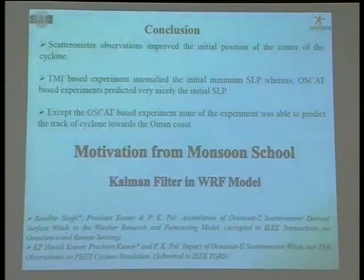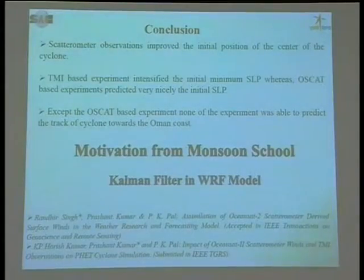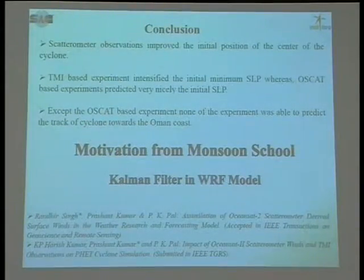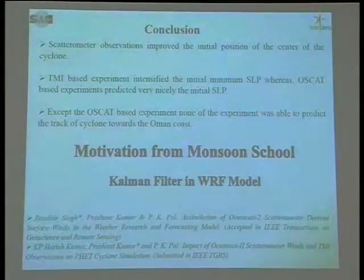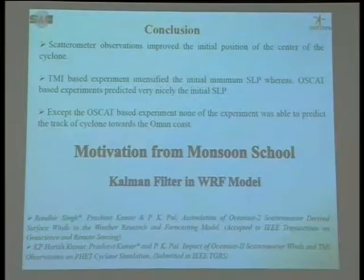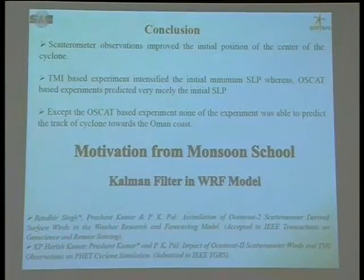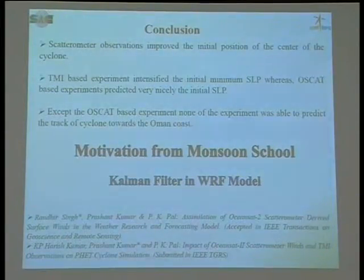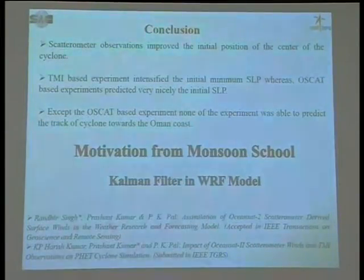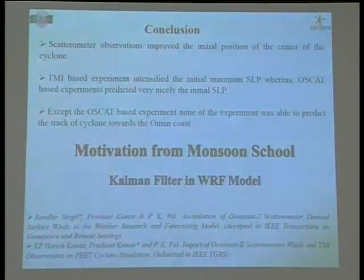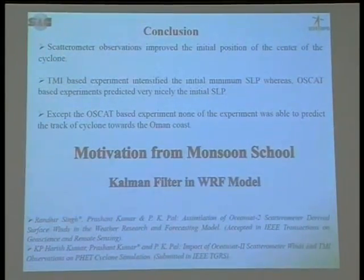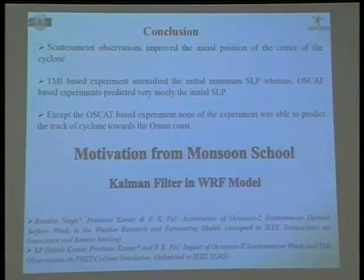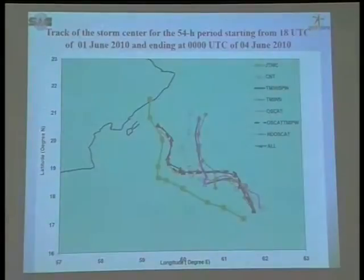Overall, the scatterometer improved the initial condition and the center position of the cyclone. TMI-based experiments intensify the initial position, but with scatterometer we nicely predict the low. Except for the OSCAT experiments, none of the other experiments was able to predict the cyclone position toward the Oman coast.